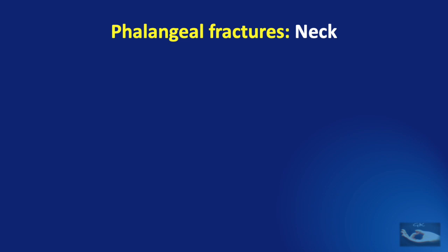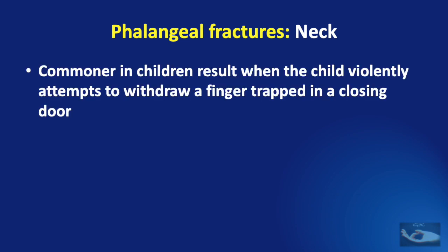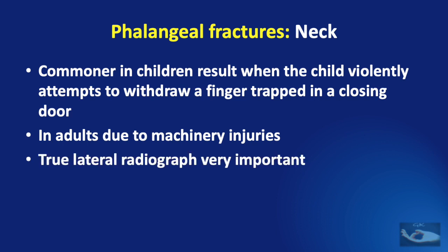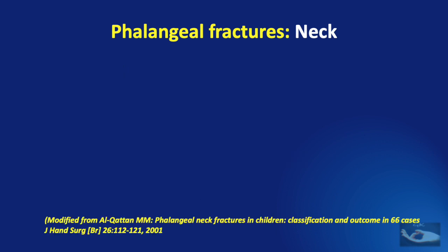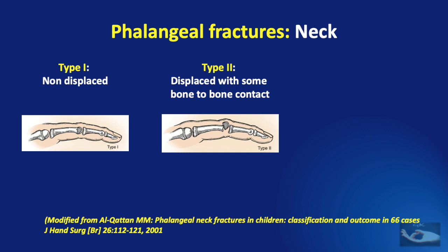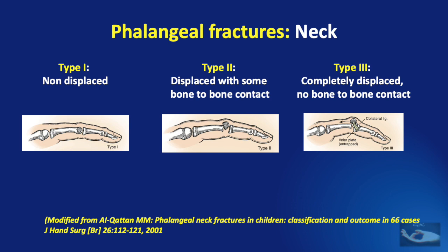We shall deal with fractures of the proximal phalanx by considering neck and shaft fractures separately. Phalangeal neck fractures are very common in children, resulting when a child violently attempts to withdraw a finger trapped in a closing door. They can also occur in adults due to machinery injuries. Obtaining a true lateral X-ray is very important to note the amount of angulation. Alcatan has classified phalangeal neck fractures, especially in children, into three types: Type 1 — non-displaced; Type 2 — displaced with some bone-to-bone contact; and Type 3 — completely displaced with no bone-to-bone contact.